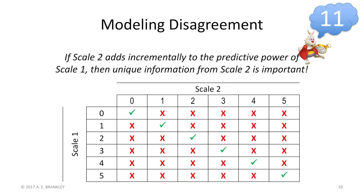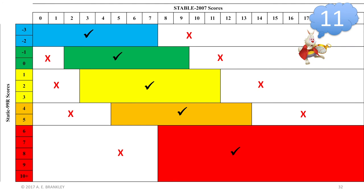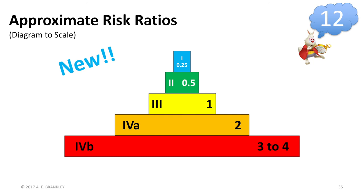The biggest change is to the static-stable combination rules. The method for combining the two scales is based upon using Stable to adjust a static risk level up or down based upon how unusual the Stable score is. We do this by figuring out what the expected Stable scores are, and then figuring out what Stable scores are unexpected or very unexpected. The final table is available in your workbooks.